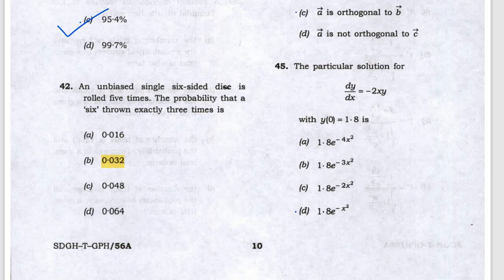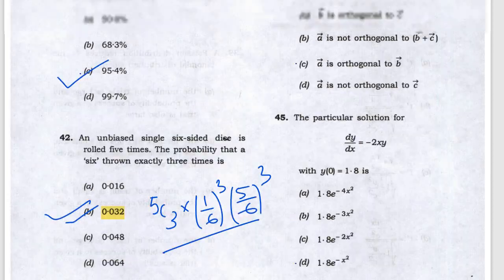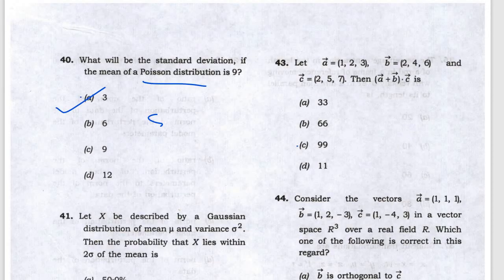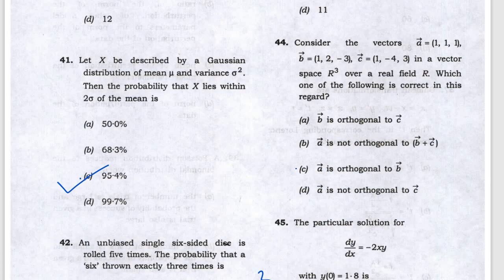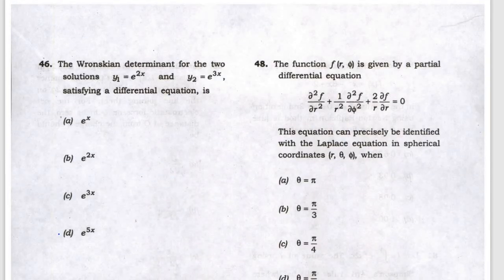They are asking probability of rolling a six exactly three times — using the binomial equation: ⁵C₃ × (1/6)³ × (5/6)² — this gives answer D. Next, A, B, C are given and A·B + B·C = 99 — the answer is A orthogonal to B. The next answer is D.